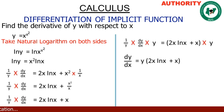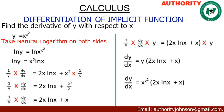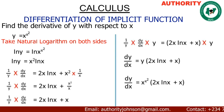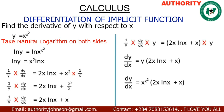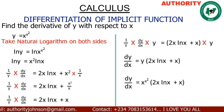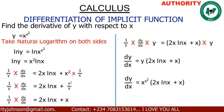Recall that our original function was y equals x raised to the power x squared. We substitute this back in for y, giving us the final answer: dy/dx equals x raised to the power x squared, multiplied by the bracket 2x ln x plus x. Thank you for watching — we've reached the end of differentiation and will now move into integration.